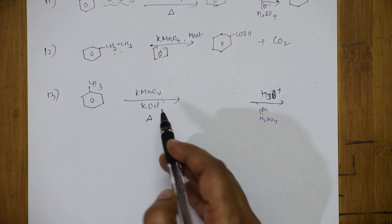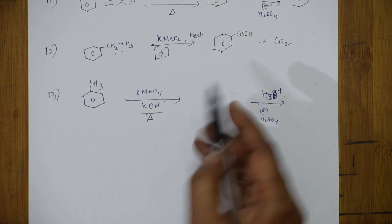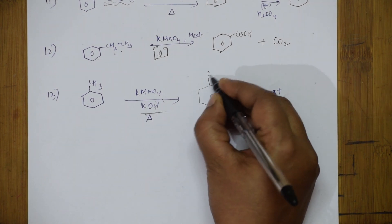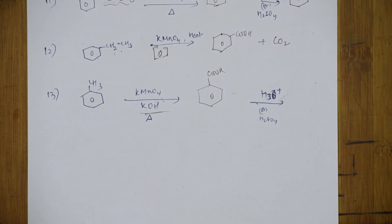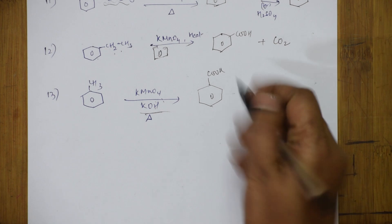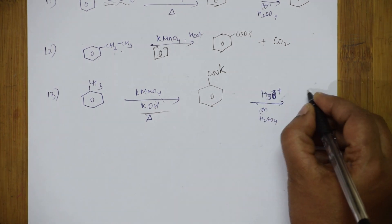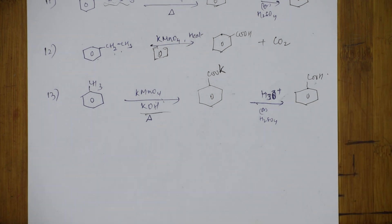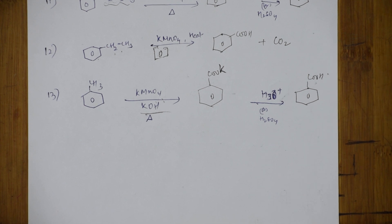Toluene is given here, again with KOH. When you see KOH, blindly write potassium benzoate regardless of the alkyl group size. Then treating with acid (H2SO4) converts potassium benzoate to benzoic acid. Practice this — the combination of KOH, KMnO4, potassium dichromate, and bromine water reactions appear across all chapters in NCERT.